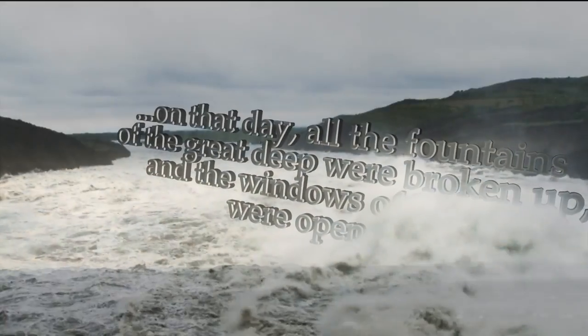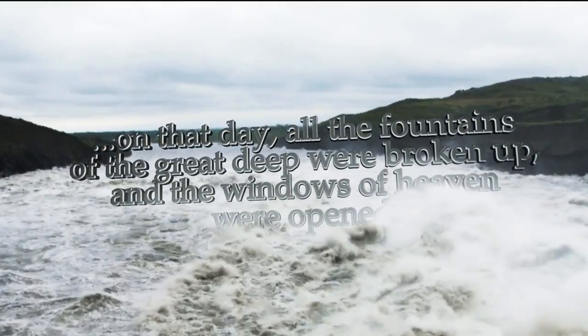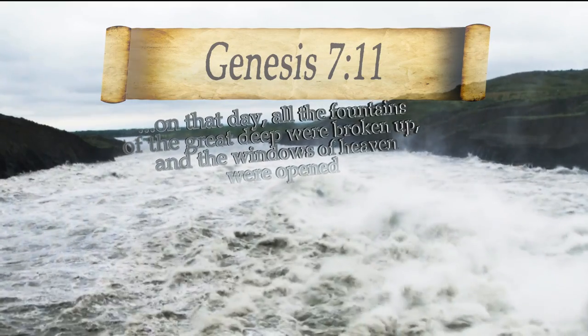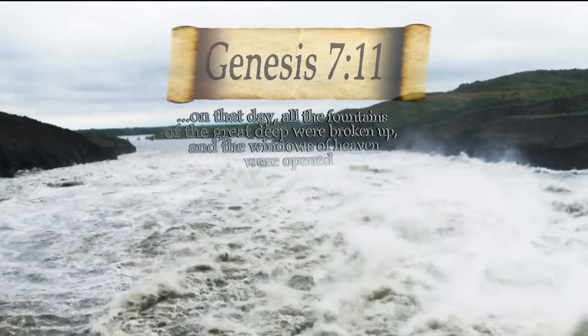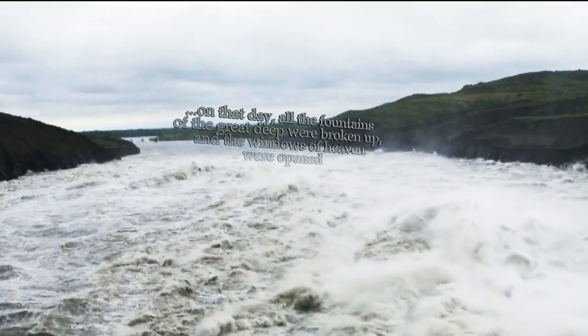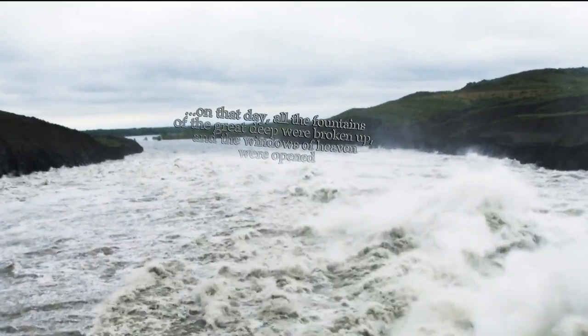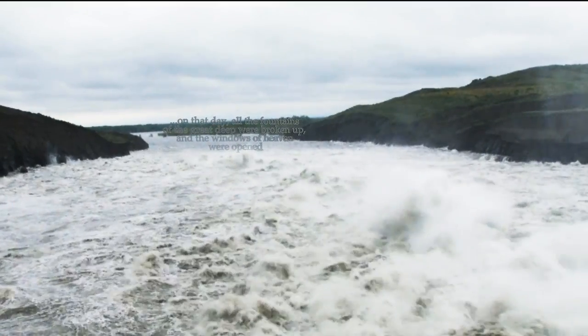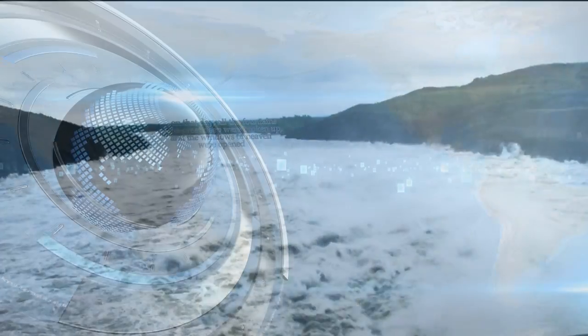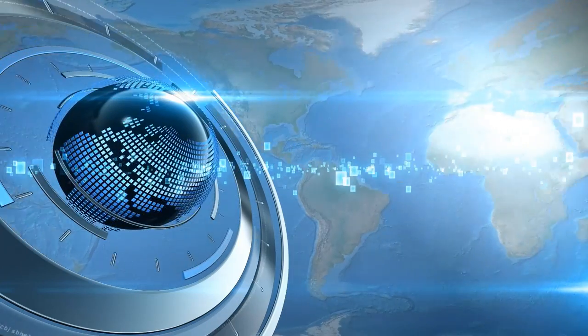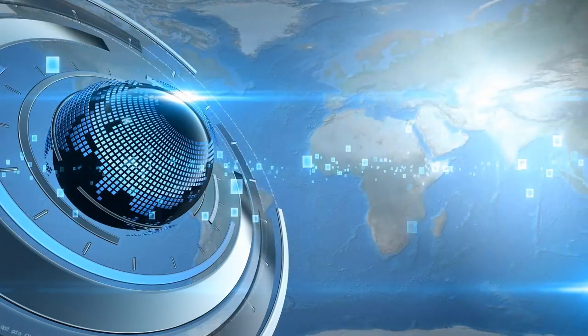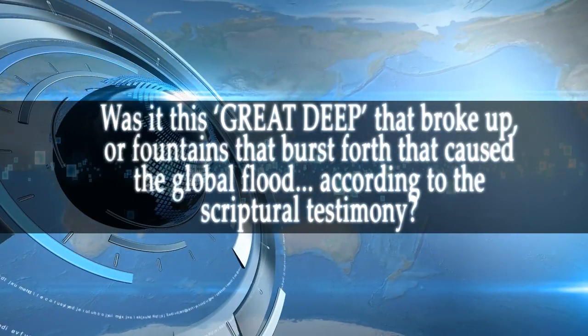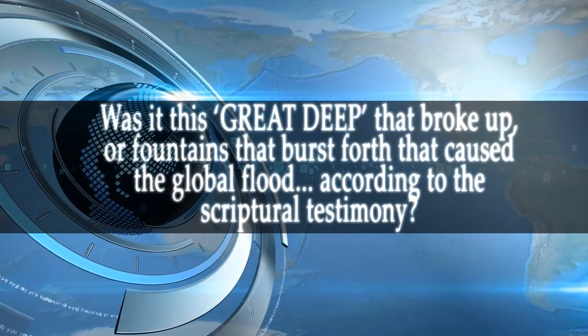In Genesis 7:11, we have the testimony of fountains or springs of the great deep. It says these burst forth or were broken up. Now, the biggest thing we can take from this testimony is first that the original gigantic ocean was called the great deep. It speaks of an immense size and is the one place that Genesis 1:9 said the waters were gathered to, leaving behind a unified single supercontinent. So our first question is, was it this great deep that broke up? Or fountains that burst forth that caused the great flood according to the scriptural testimony?